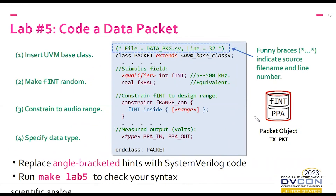That brings us to lab 5, which is pretty simple — just five minutes. Fill in the double-angle-bracketed hints: the UVM base class appropriate here, the qualifier needed to declare the frequency field as a random variable, the integer frequency range, and the type of the peak-to-peak amplitudes. You can check your syntax by executing make lab5. The brace notation shows which file to look in and the approximate line number, around line 32.